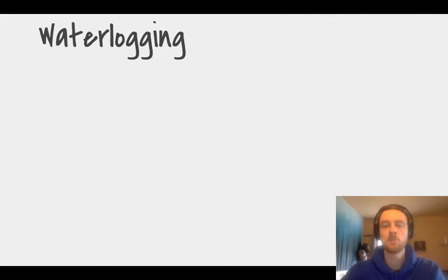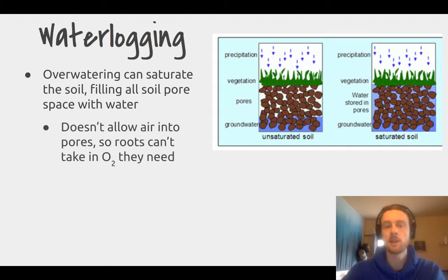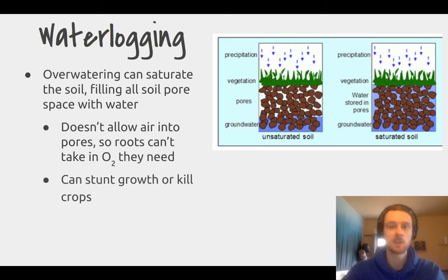Now we'll talk about water logging, which is something that can happen with excessive water use. When you water your crops more than the soil can hold, the water fills up all of the pore space in your soil — we can see that in the diagram here. All of those pore spaces, some of which used to be filled with air, are now filled with water. This doesn't allow air into these pores, so the roots can't take in the oxygen they need in order to grow. This can stunt plant growth or even kill your plants altogether if they're not tolerant to waterlogged soils.